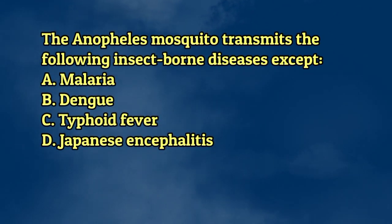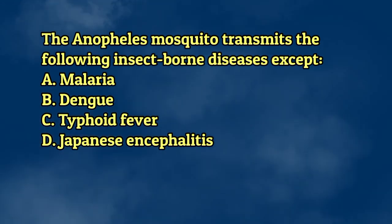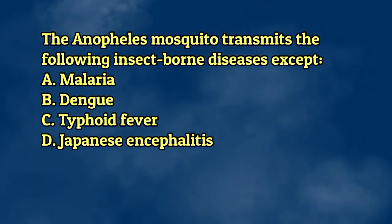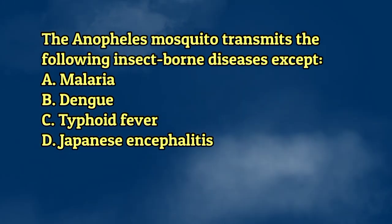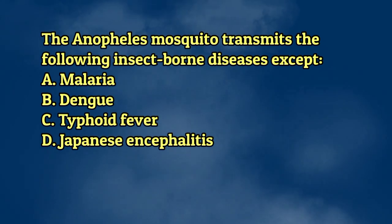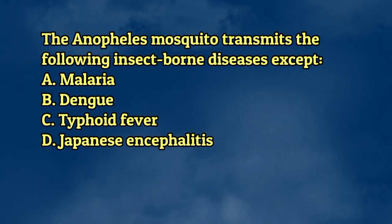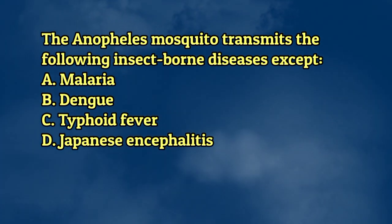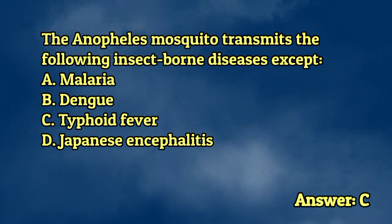The Anopheles mosquito transmits the following insect-borne diseases except. A. Malaria. B. Dengue. C. Typhoid fever. D. Japanese encephalitis. The answer is letter C.